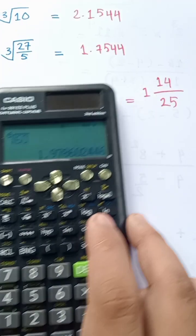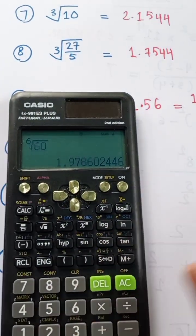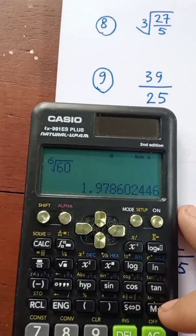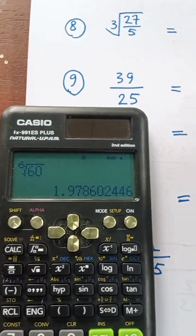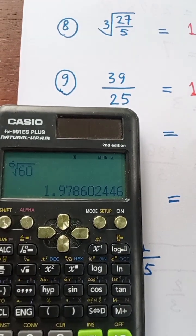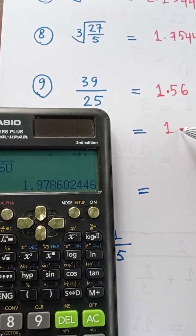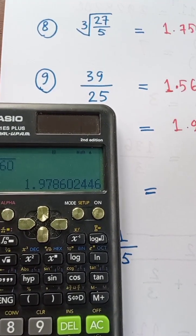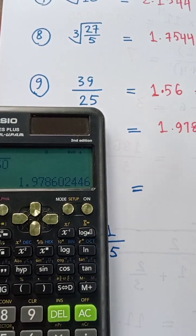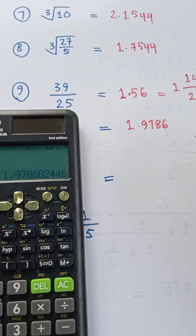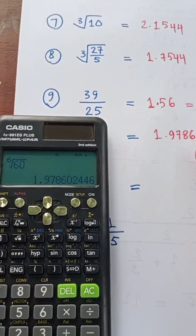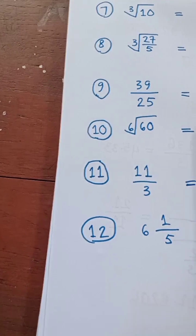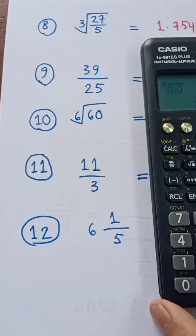One point nine seven eight seven, one point nine seven eight six.